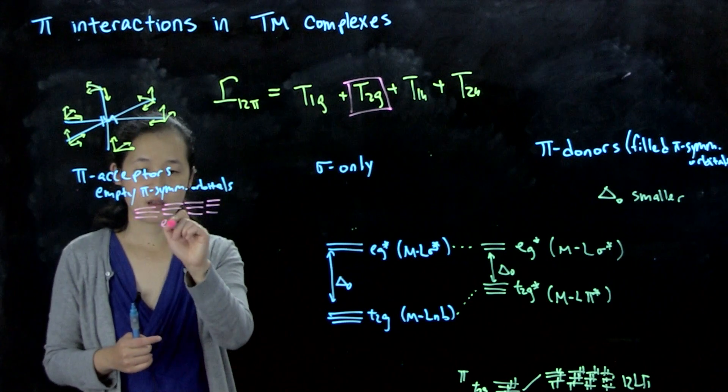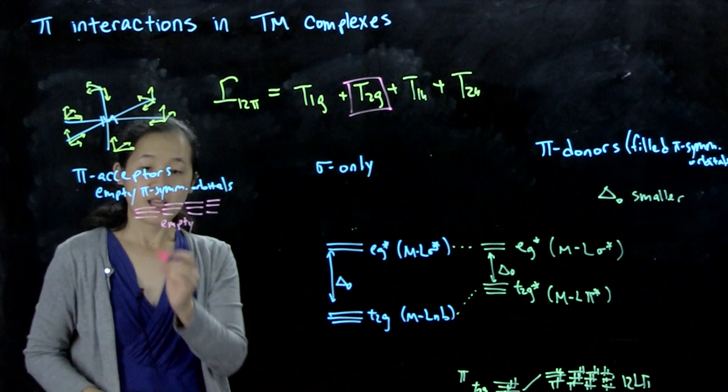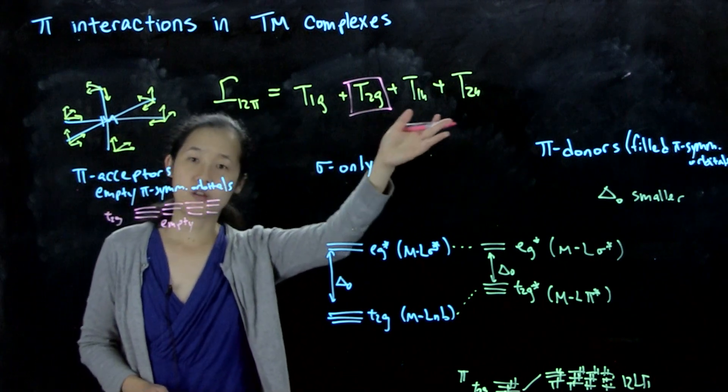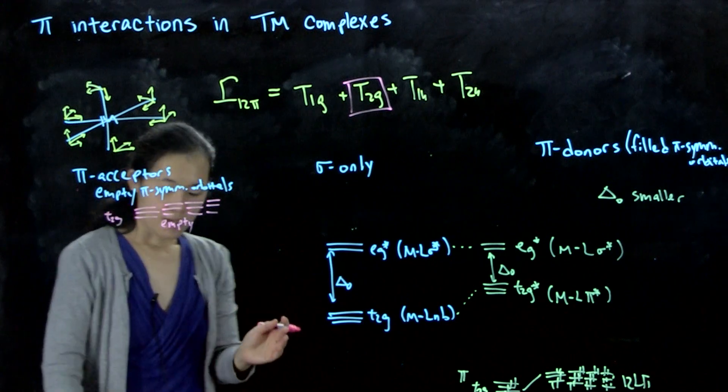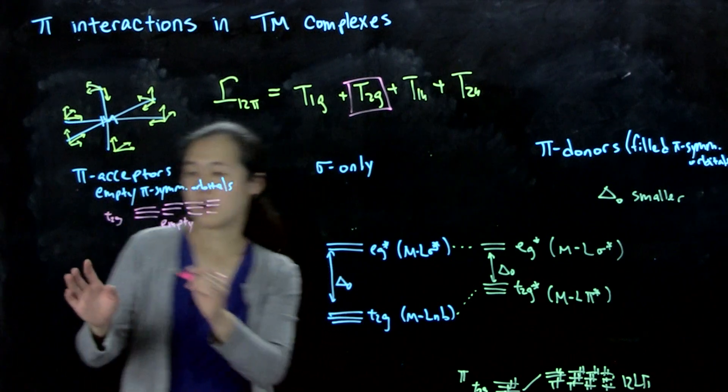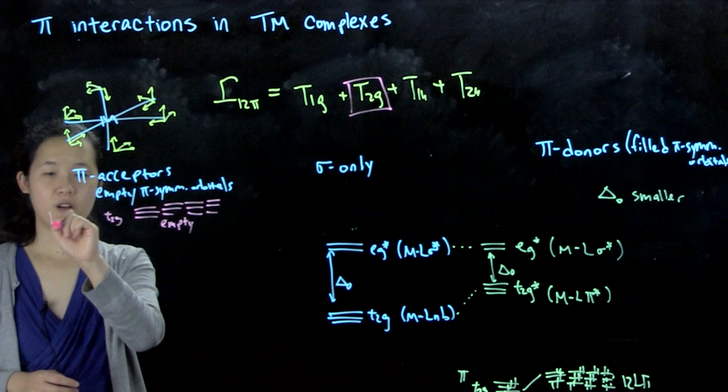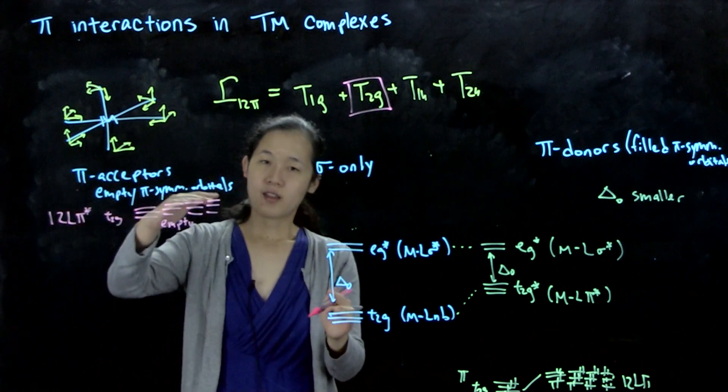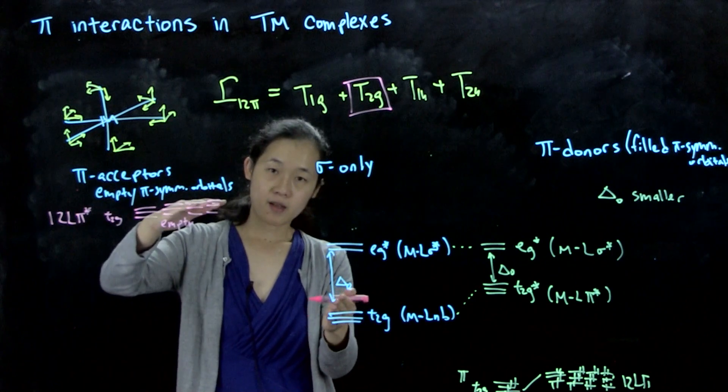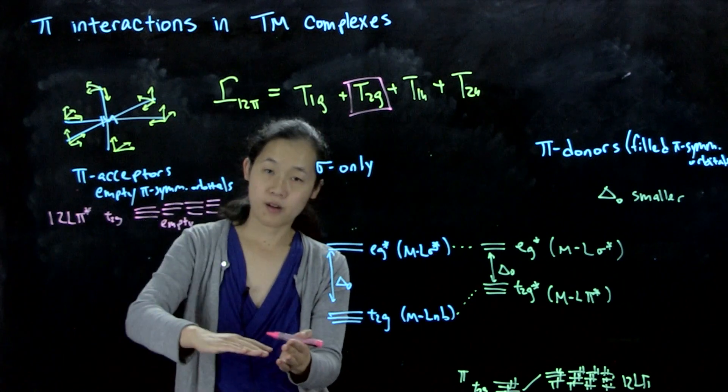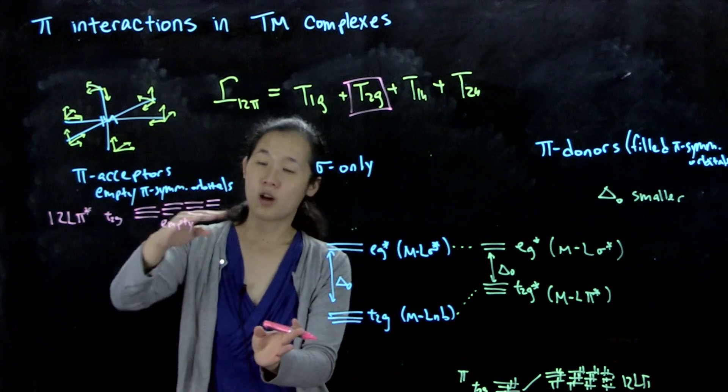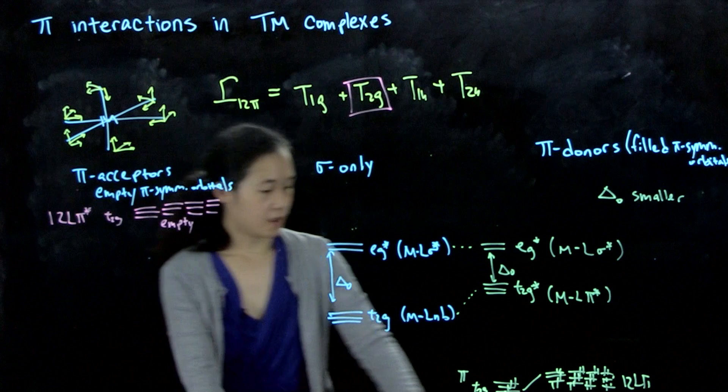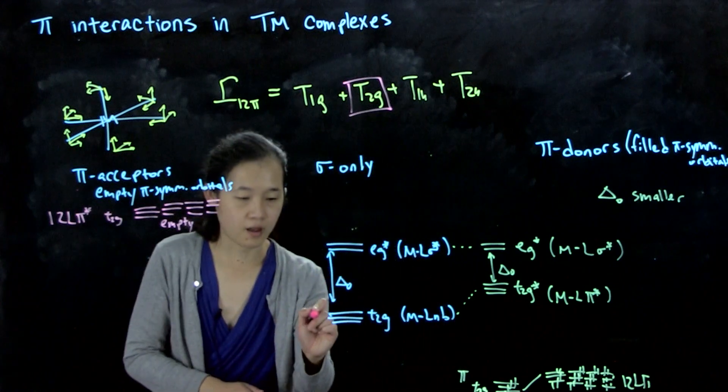Remember, these are empty. And again, we have a T2G in here, as well as the T1G, T1U, T2U. So when we interact this T2G in our 12 ligand pi-stars here, when we interact these, they will have bonding, anti-bonding, but the bonding ones will now be closer in energy to the metal. So they'll be more metal-centered, while these ones that are anti-bonding go up. So this will form our T2G from the metal, it goes down.